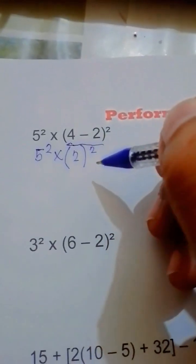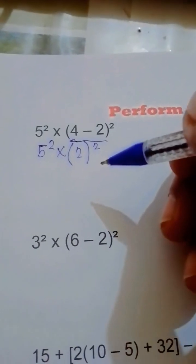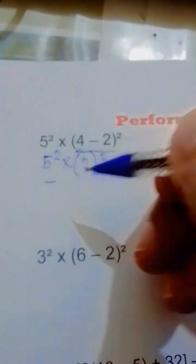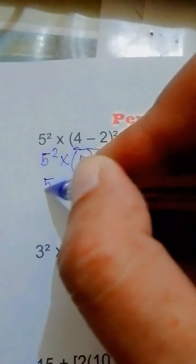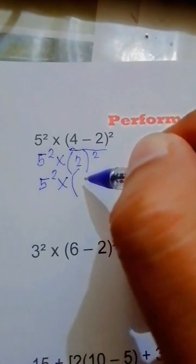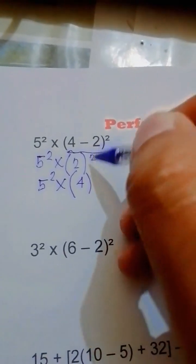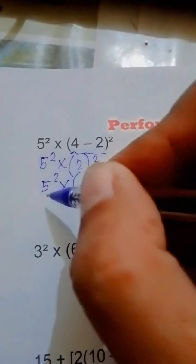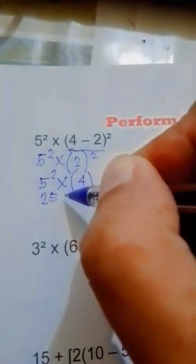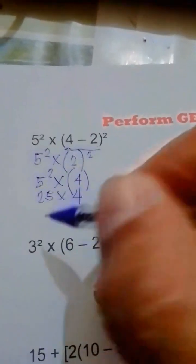Next step is the exponent. So after groupings we move to exponent. 5 to the power of 2 copy, then multiplied by 2 raised to the second power is 4. So 5 squared equals 5 times 5, so the answer is 25 times 4.